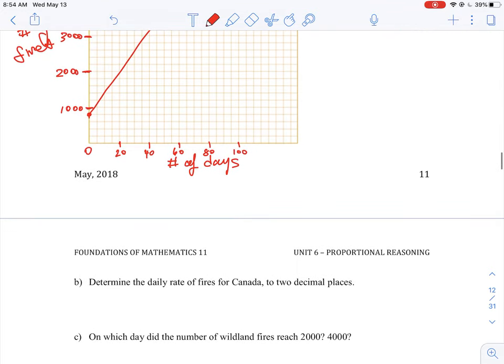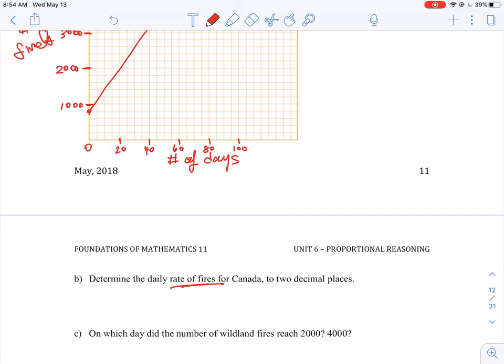Our next question says, determine the daily rate of fires. So the rate of fires. So remember, rate is implying we have a slope.